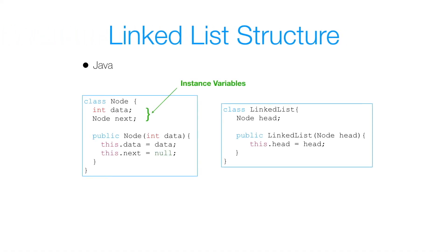So let's get to the structure of a linked list. Here I'm using Java, but the idea of a linked list is really independent of the programming language used. Here I have a node class that has two instance variables: my data and a reference called next. Notice that my next reference has a type of node, so it can reference an object of that type.